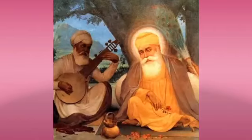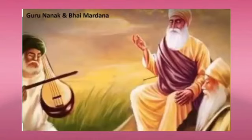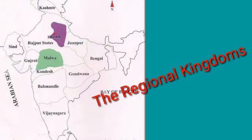Mardana, a disciple of Guru Nanak, also popularized devotional singing. The period of the Delhi Sultanate witnessed the development of a composite culture in India. This trend was replicated in the regional kingdoms that emerged during this period.